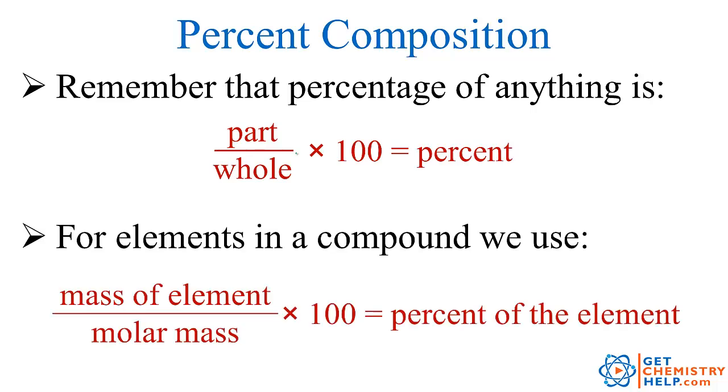In a compound it's the same way. So if I want to know the percentage that was hydrogen, I would take the mass of all of the hydrogen and divide that by the total, which is what we learned in the previous lessons called the molar mass. And then I multiply that by 100 and that gives me the percent of hydrogen.